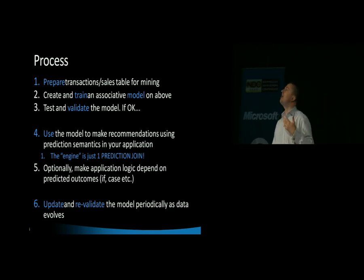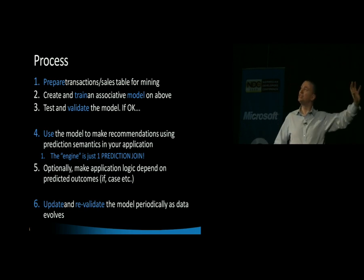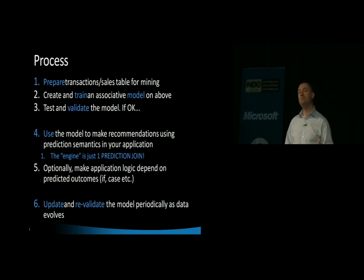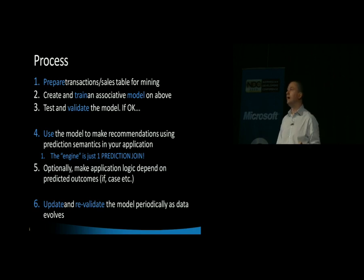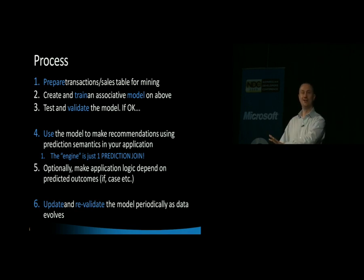You test and validate the model — nothing different from a normal data mining process. Step four is the heart of your application: somewhere in your code, you use the model to perform a recommendation. The trick is the prediction join semantics — that is the engine. One prediction join is the engine for recommendations. Many people consider prediction joins easy, but associative prediction joins cause trouble, partly because most examples in SQL Books Online don't work.